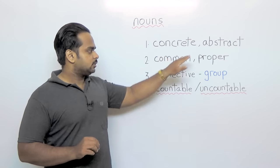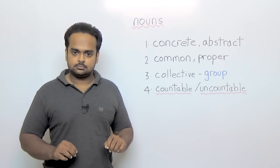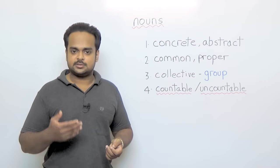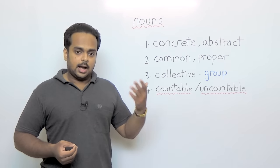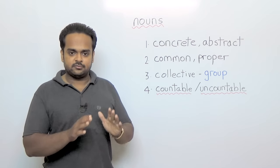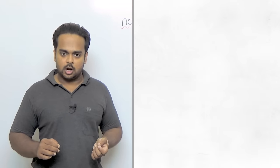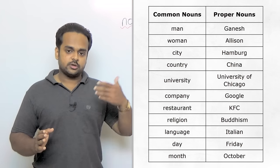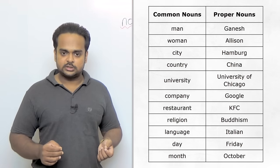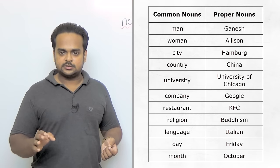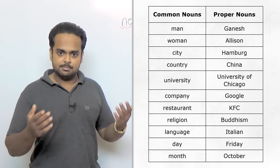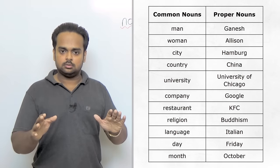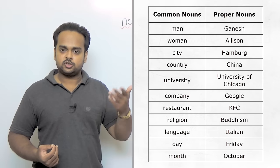Let's now talk about common and proper nouns. Do you know what common and proper nouns are? A common noun is a general noun, and a proper noun is the name given to a specific individual. For example, in this chart, all the nouns on the left are common nouns and all the nouns on the right are proper nouns. Man is a common noun because it can mean any man. But Ganesh is the name of one man, one individual, which in this case is me of course. So Ganesh is a proper noun.